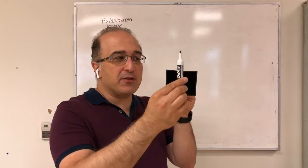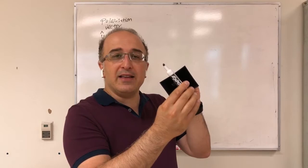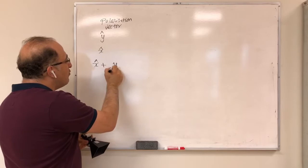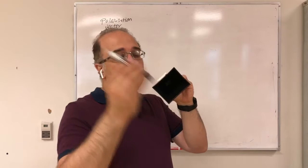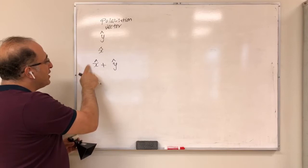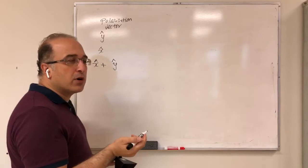But you could also do something else. For example, if you rotate the electric field 45 degrees, it is still linearly polarized, and it's going to be x-hat plus y-hat. But remember, we define the polarization vector to be a unit vector, so its magnitude should be 1. Right now the magnitude is square root of 2, so it's not a unit vector.